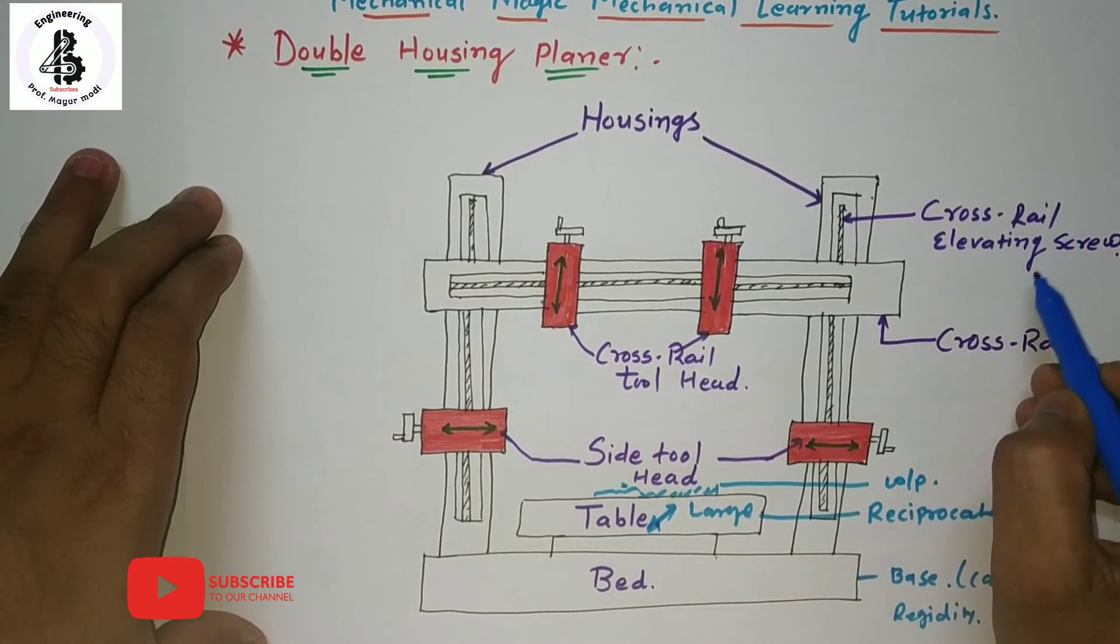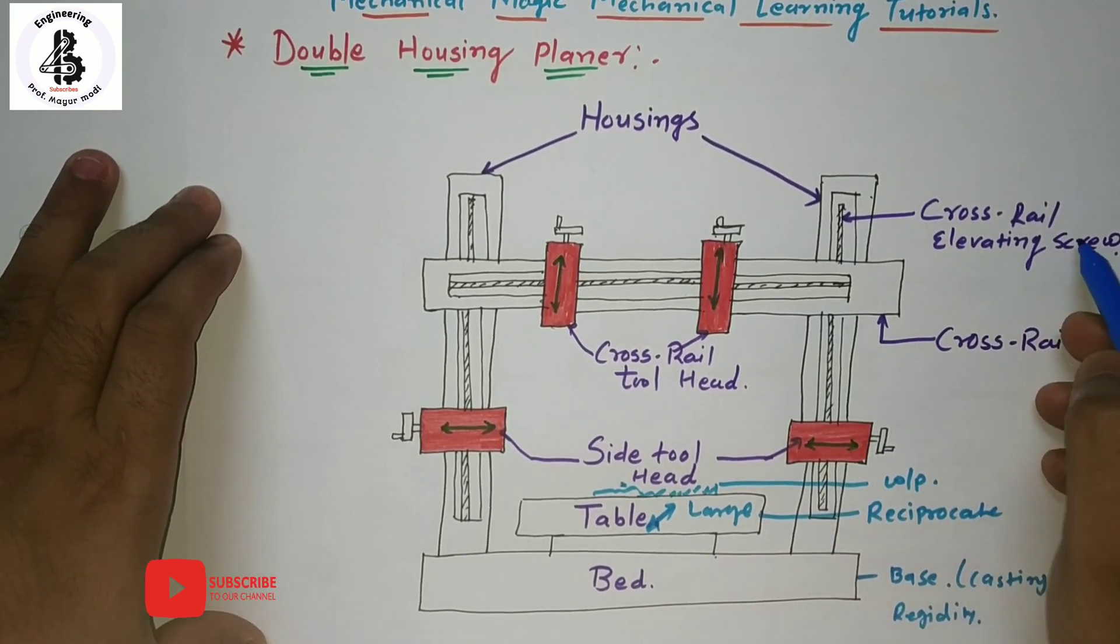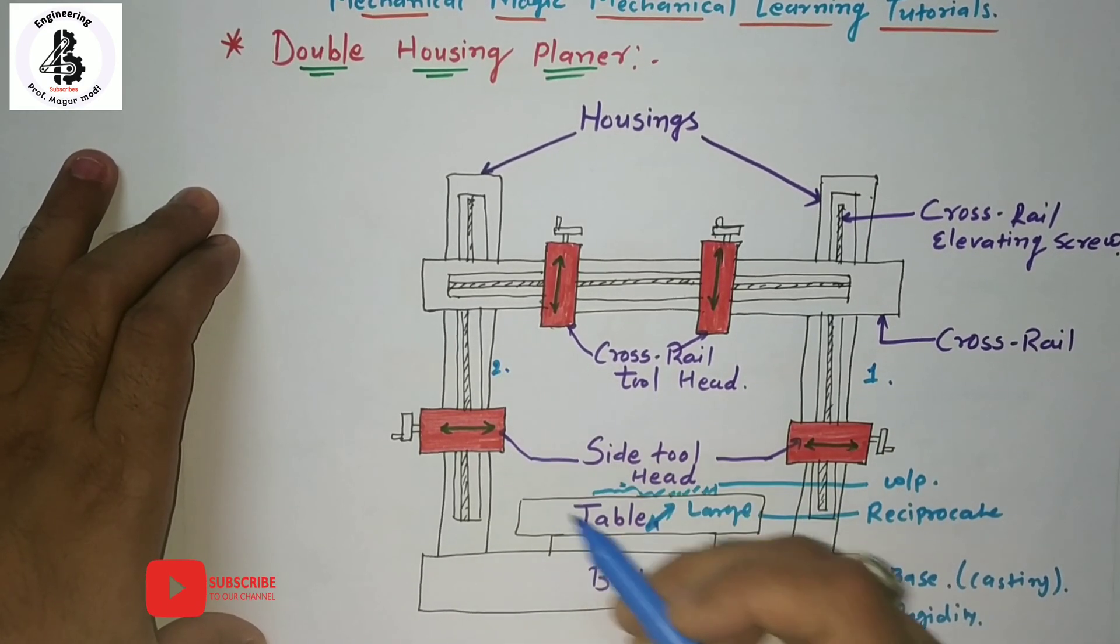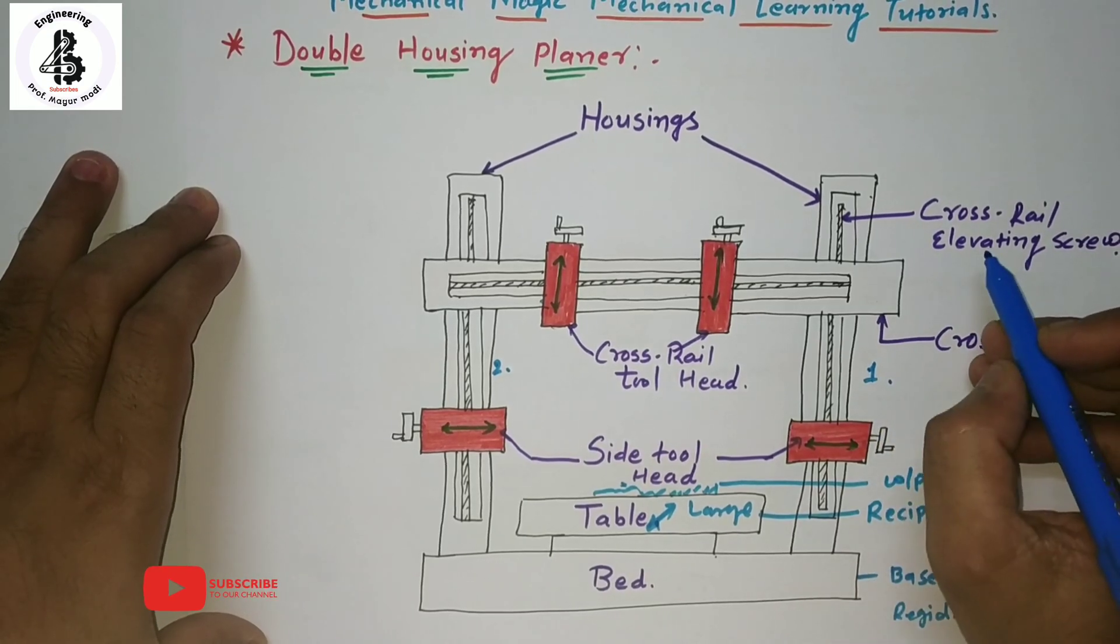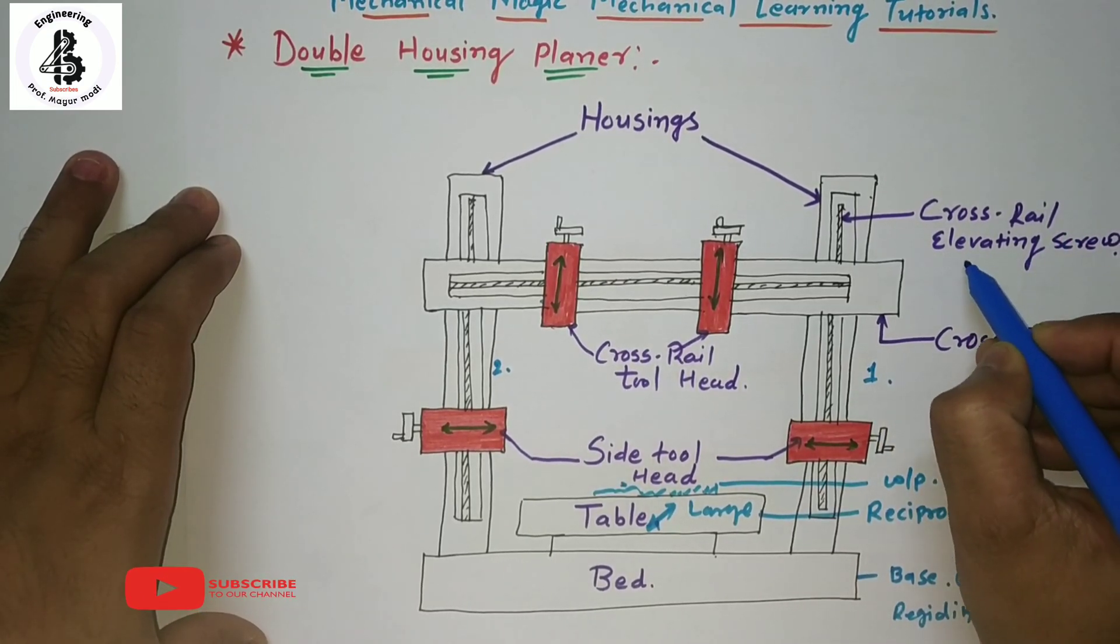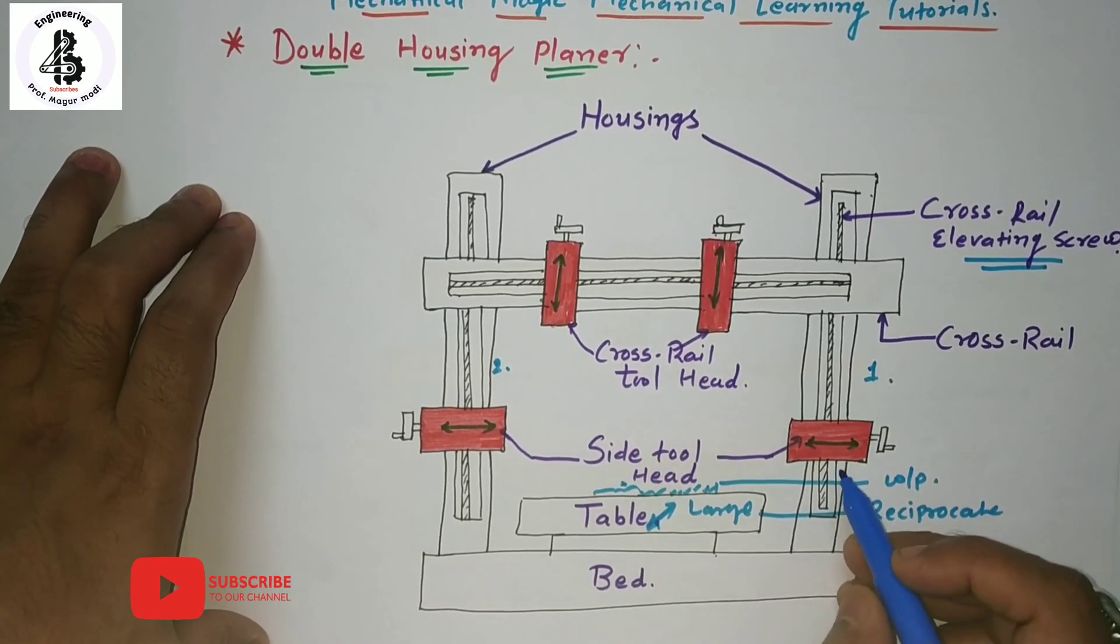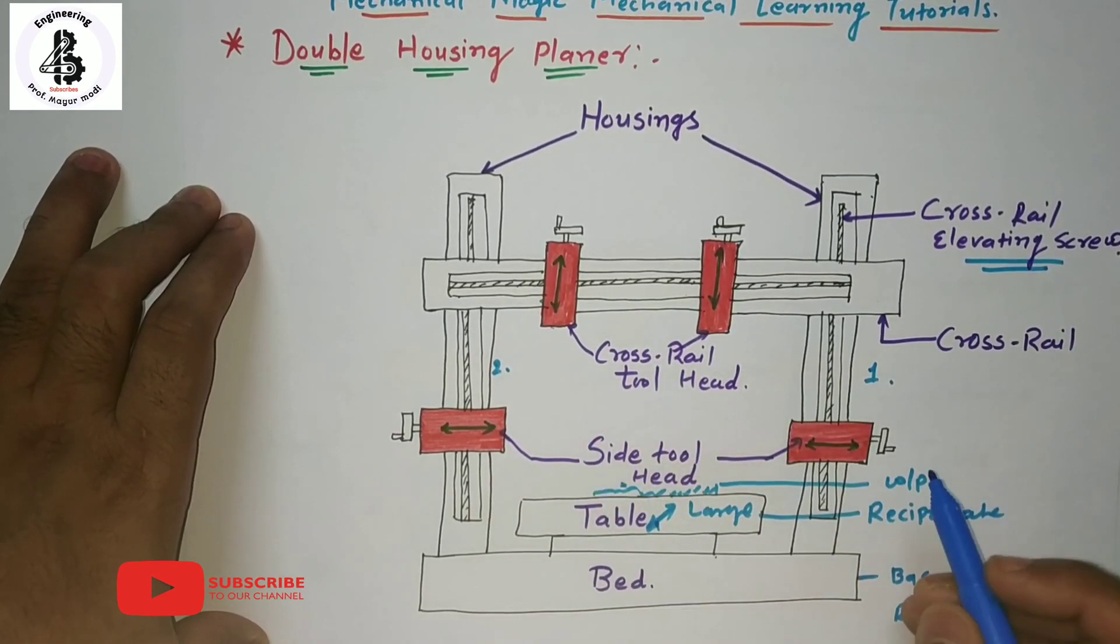That will be the cross rail elevating screw. Here it will be two columns: column number one and column number two. With the application of the cross rail facilitating or you can say the elevating screw.